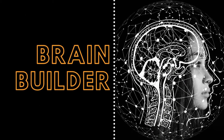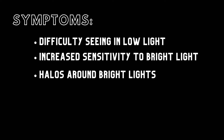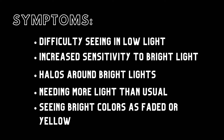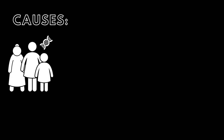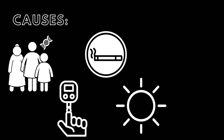Next, we will look at the symptoms, causes, and treatments for cataracts, and then give a patient example. If an individual is developing cataracts, they may experience symptoms such as difficulty seeing in low light, increased sensitivity to bright light, halos around bright lights, needing more light than usual, and seeing bright colors as faded or yellowish in hue. The odds of developing cataracts increase when there is a family history or if an individual has diabetes, smokes, or spent a lot of time in bright sunlight. Cataracts may also develop after an injury to the eye.